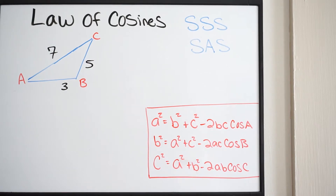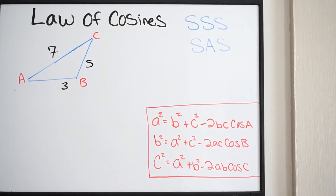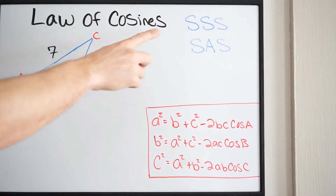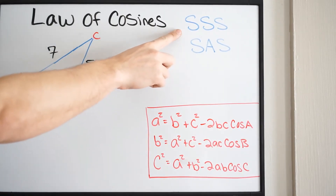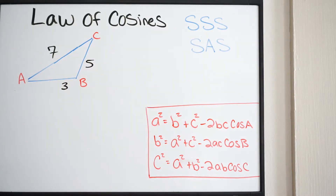In this example we're going to be talking about the law of cosines. Up until this point we have been talking about the law of sines. However, we are limited in our ability when dealing with triangles such as side-side-side and side-angle-side, because we cannot solve these types of triangles using the law of sines. However, we can solve them using the law of cosines.